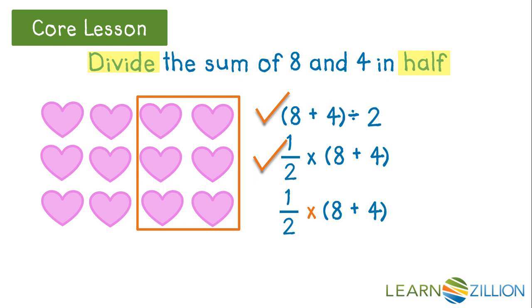There's another way that you can write 1 half times 8 plus 4. You can completely leave the multiplication sign out and put the 1 half right next to the parentheses. When you have a number right next to the parentheses, that means to multiply. That's just a convention of mathematics that makes it a little bit quicker to write an expression.